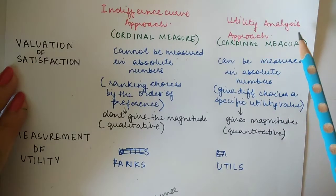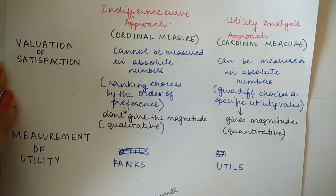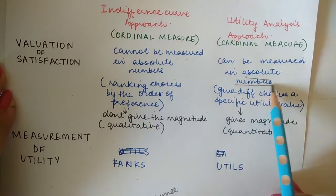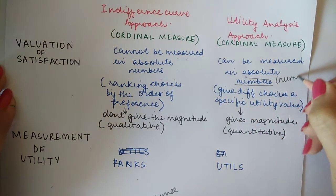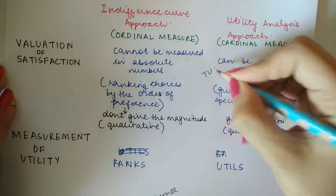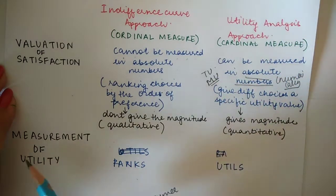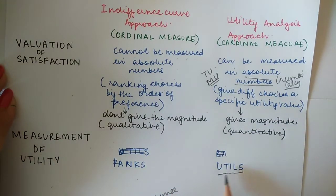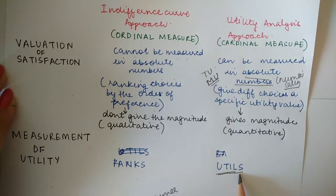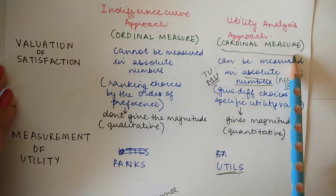In the utility analysis approach of Marshall, utility is measured in absolute numbers — numerically in simple units — and is expressed in terms of total utility and marginal utility. The measurement of utility is in utils. In reality you cannot measure utility numerically because it is a very subjective phenomenon. This is known as the cardinal measure of utility analysis.